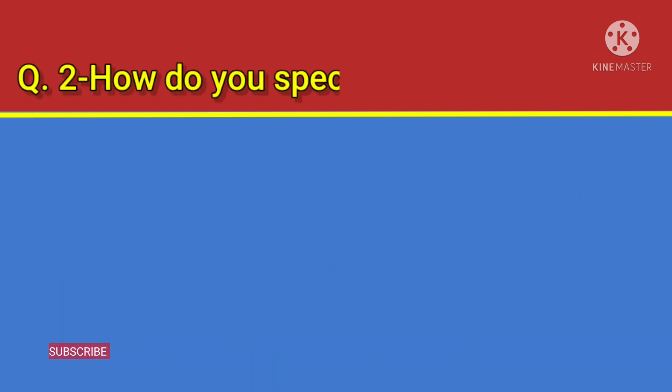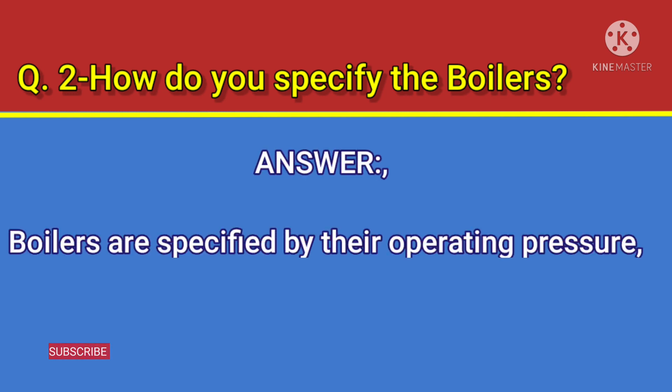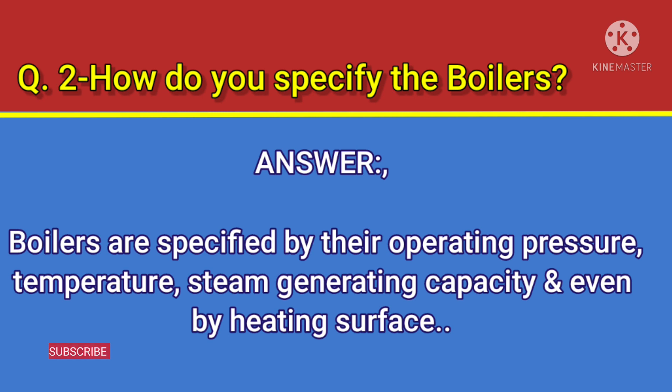Question number 2: How do you specify the boilers? Answer: Boilers are specified by their operating pressure, temperature, steam generating capacity, and even by heating surface.